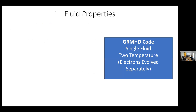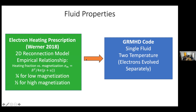Ideal MHD means setting explicit resistivity to zero — the standard MHD condition. The code is a single-fluid code, but we evolve the electrons separately — a two-temperature code — using Greg Werner's electron heating prescription. It's a 2D reconnection model that assigns an electron heating fraction based on the magnetization in that region. It stays around 0.4 for our models but can get as high as 0.5. We don't have radiation in our models — Sagittarius A-star is a fairly low-luminosity source.